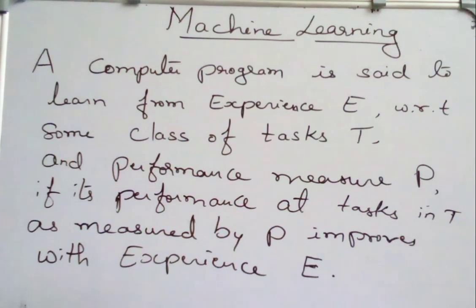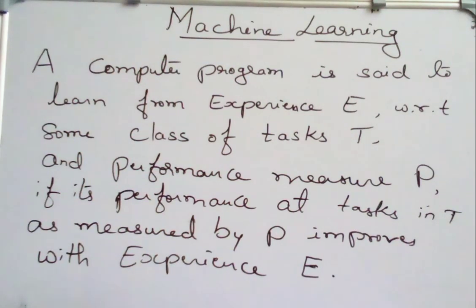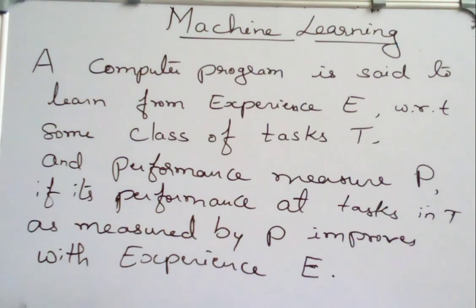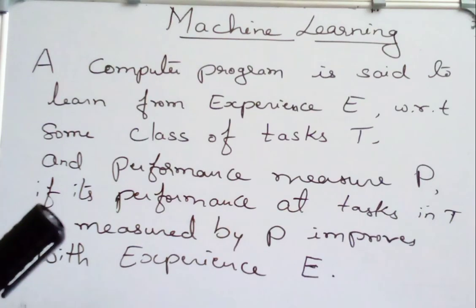Machine learning is a study of computer algorithms that can improve automatically through experience and by the use of data. It is seen as a part of artificial intelligence, and machine learning algorithms build a model based on some sample data known as training data in order to make predictions or decisions without being explicitly programmed. Many machine learning algorithms are used in a wide variety of applications such as medicine, speech recognition, recommendation systems, or self-driving cars.